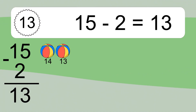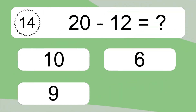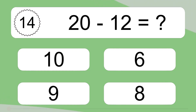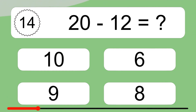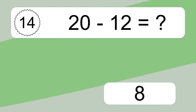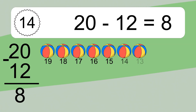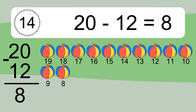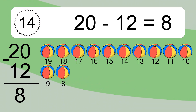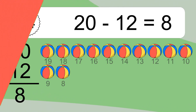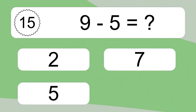20 minus 12 equals what? 20 minus 12 equals 8. Let's count it. 19, 18, 17, 16, 15, 14, 13, 12, 11, 10, 9, 8.